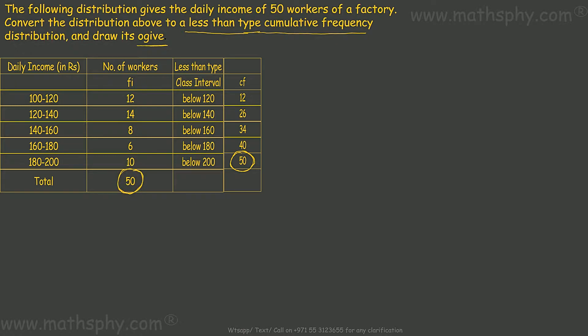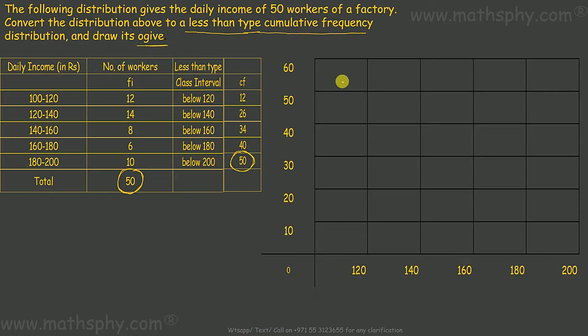It says draw its ogive. We have this graph here. It says less than type cumulative frequency means we have to take the upper values of these intervals.